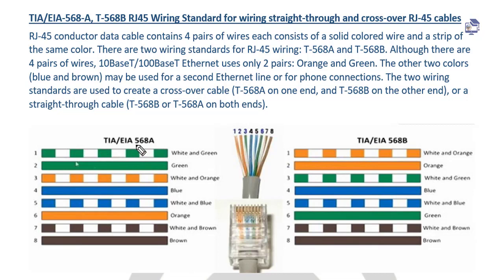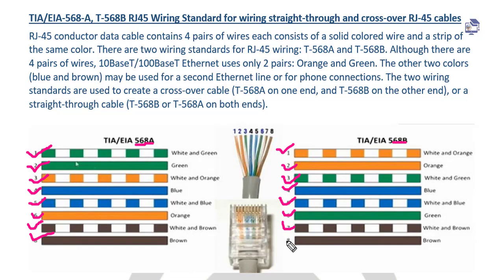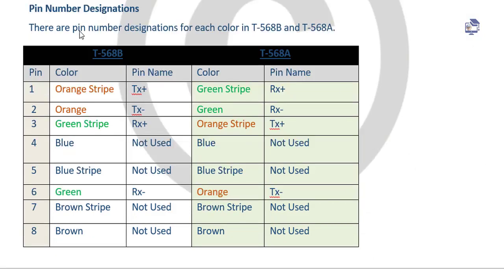This is the color coding for T568B. Green white, orange white is blue, blue white is orange, brown white is brown. White of orange is orange, white of green is blue, white of blue is green, brown is brown. White of black or red, yellow is green.